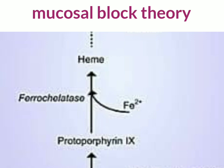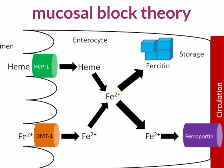Coming to heme iron absorption, it is directly absorbed into the cell by heme carrier protein 1 (HCP1).